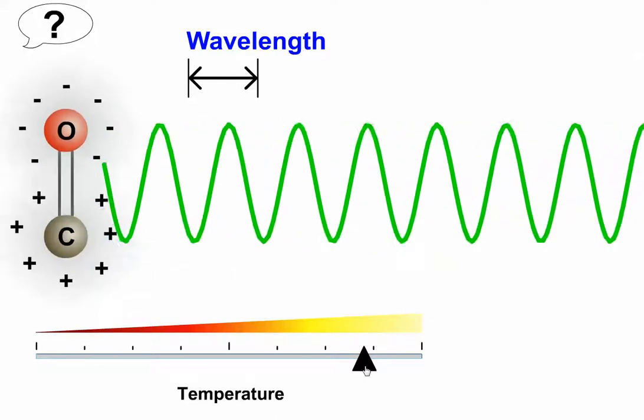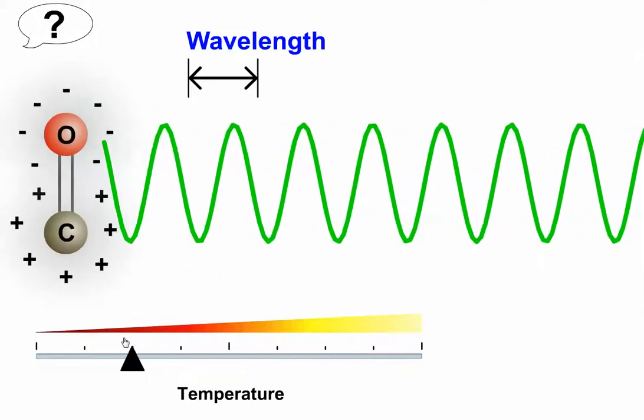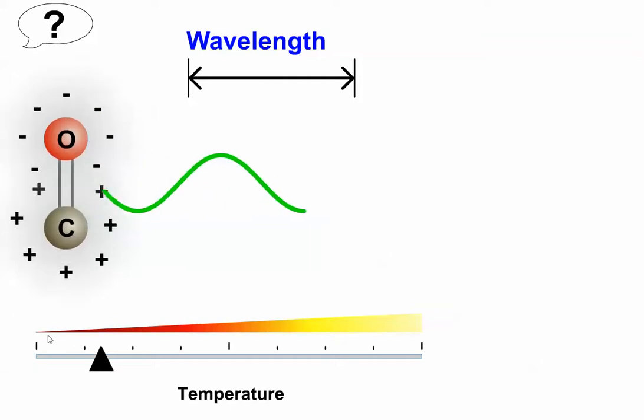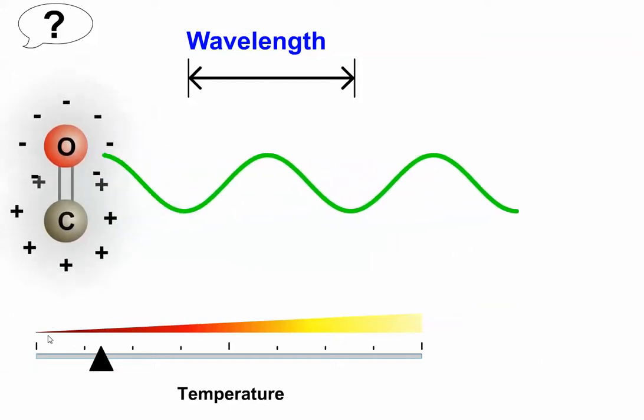For comparison again, we can decrease our temperature to watch the oscillation frequency slow and the wavelength of the emitted radiation increase.